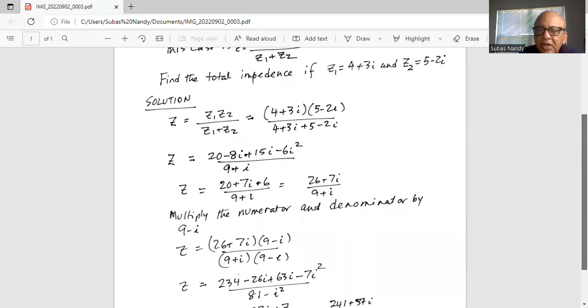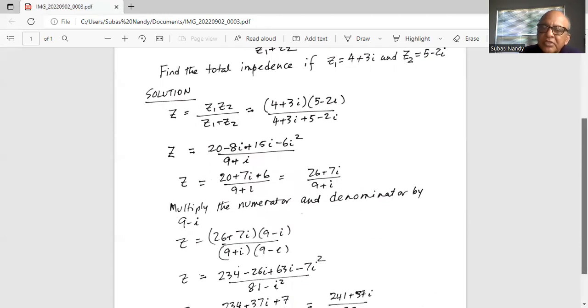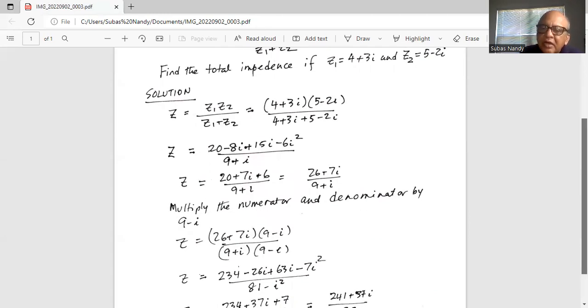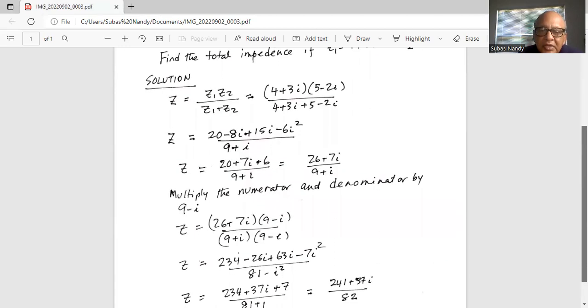Now we will multiply the numerator and denominator by the conjugate of 9 plus i, which is 9 minus i. So it is 9 minus i in the numerator and 9 minus i in the denominator.